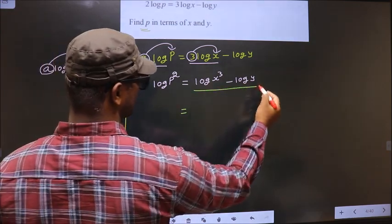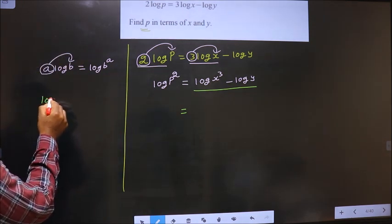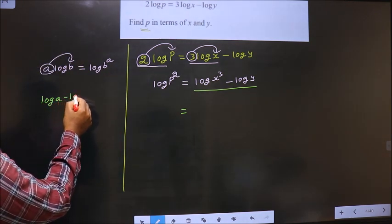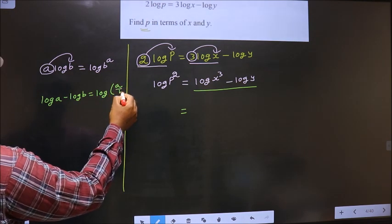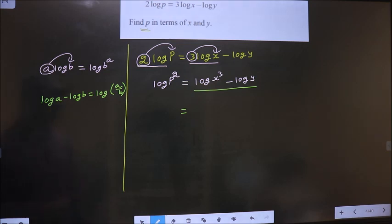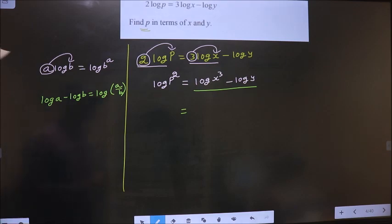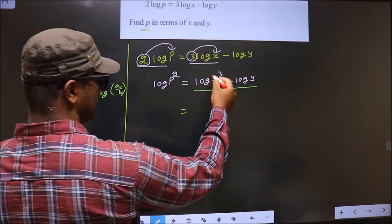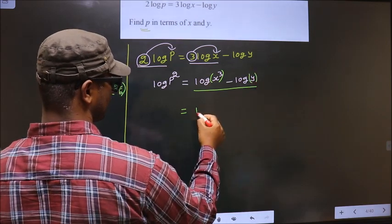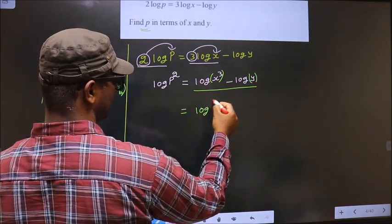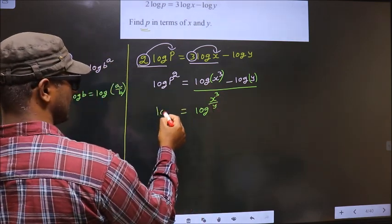Now on these 2 terms I will apply the formula that is log a minus log b is log a by b. Whenever you have subtraction, in the result you get the fraction. So here in place of a you have x cube, in place of b it is y. So you get log a by b. And on this side, this as it is.